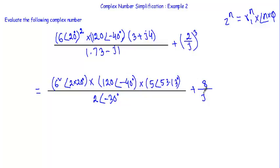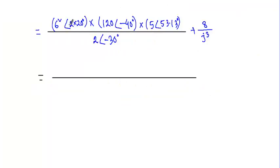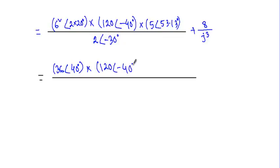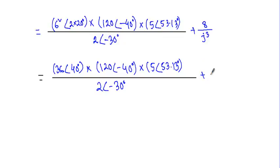So the expression becomes: 36 phase angle 40 degrees, into 120 phase angle minus 40 degrees, into 5 phase angle 53.13 degrees, divided by 2 phase angle minus 30 degrees. We also have the term 8 divided by j cubed, which we can write as 8 divided by j-squared times j.